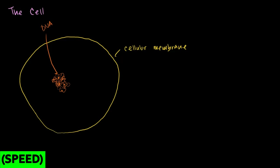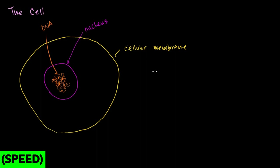Here's the first major division in the living world: some cells have a membrane around the DNA. A membrane that separates the DNA, the chromatin, and everything within the DNA from the rest of the cell — and this is called a nucleus. That's a major division, because when people looked at some cells and saw a nucleus, and other cells didn't have one, they said this is a good way to classify organisms. Things that have nuclei are called eukaryotes.